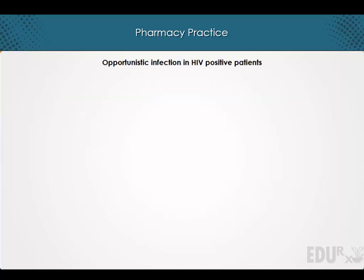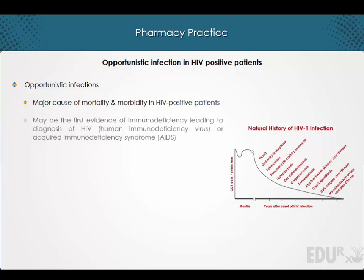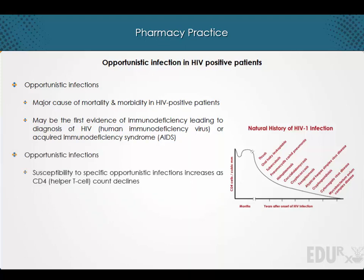Welcome to a lecture on opportunistic infections in HIV positive patients. Opportunistic infections are a major cause of mortality and morbidity in HIV positive patients, and may be the first evidence of immunodeficiency leading to the diagnosis of HIV or AIDS. Susceptibility to specific opportunistic infections increases as the CD4 count declines.